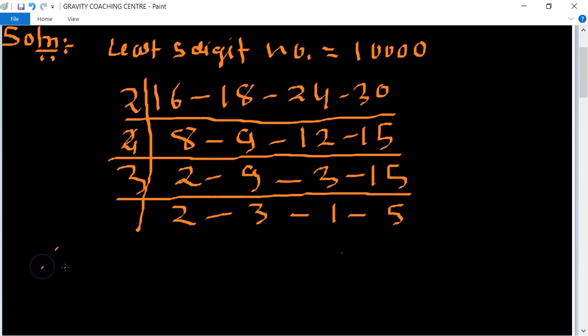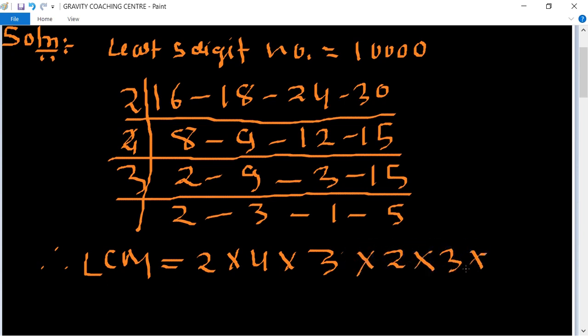So therefore LCM equal to 2 into 4 into 3 into 2 into 3 into 5 equal to 720.